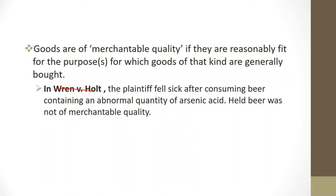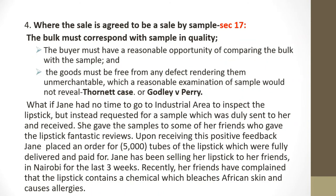Section 17 of the Sale of Goods Act is the next key implied condition. Section 17 emphasizes that the bulk of goods must correspond with a sample in quality. If you send for a sample and discover it is excellent, the bulk later delivered to you must match that sample. Remember Sections 16(b) and 17 as you encounter discussions on sale of goods matters.